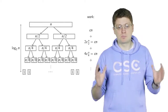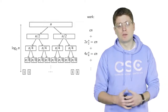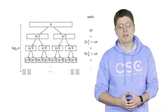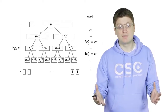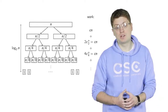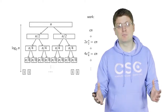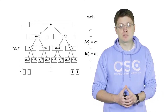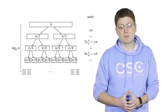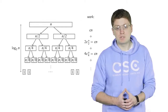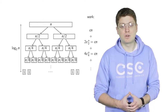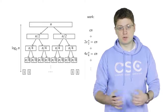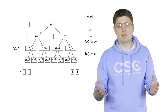So we have proved that the running time of the merge-sort algorithm is O(N log N). In the next video we will show that no comparison-based algorithm can sort a sequence of N elements asymptotically faster than N log N, which means that the merge-sort algorithm is asymptotically optimal.